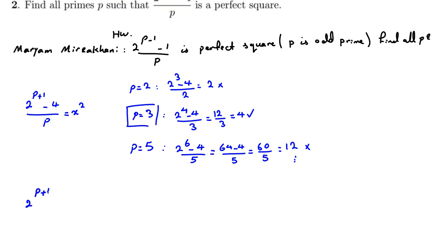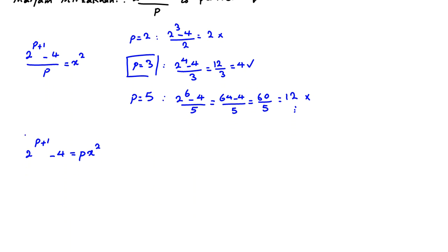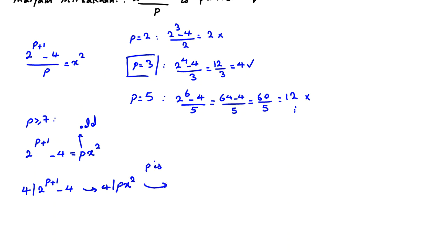Let's consider the general case. We say 2^(p+1) - 4 = px². Since p is odd and we've checked up to p = 5, we assume p is at least 7. The left-hand side is a multiple of 4 because 2^(p+1) is a multiple of 4 and so is 4. So 4 divides the left-hand side, which is 2^(p+1) - 4, and also 4 divides px². Since p is odd, by Euclid's lemma we can cancel p.